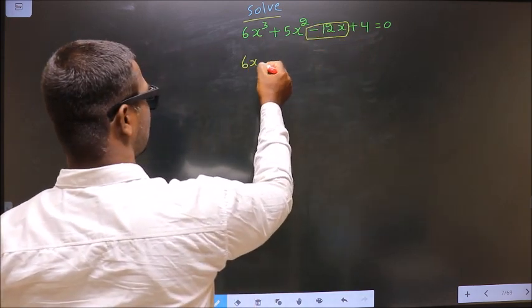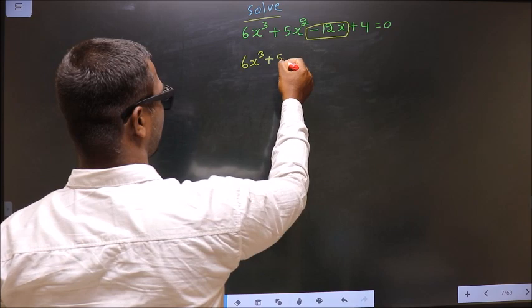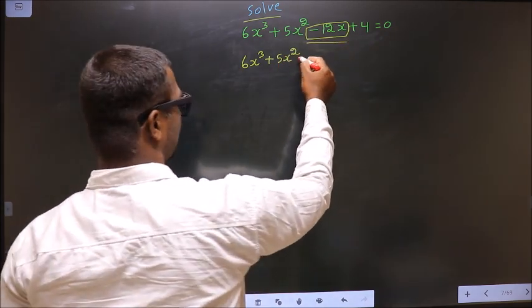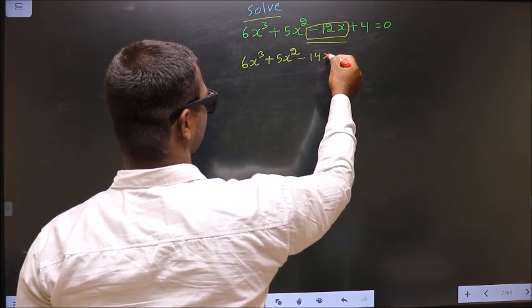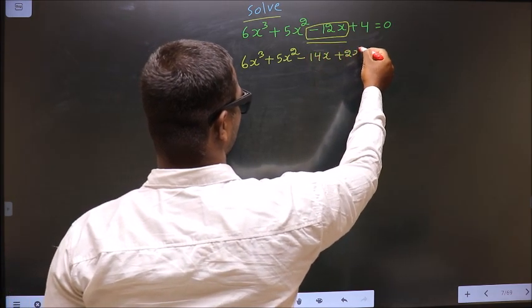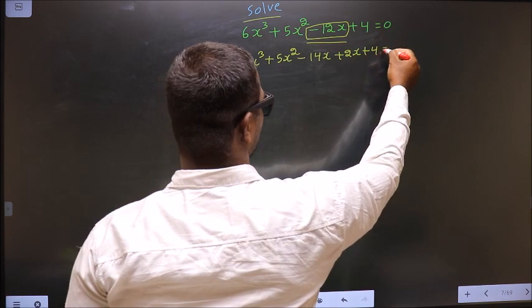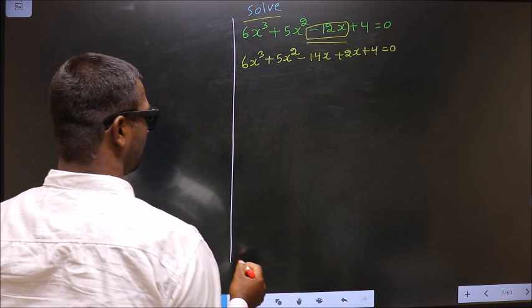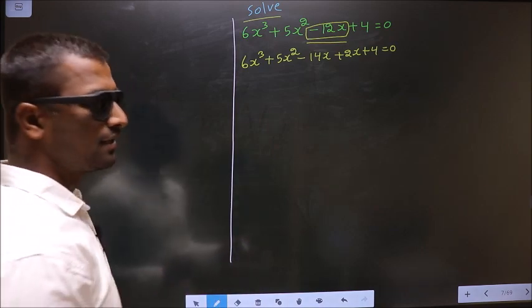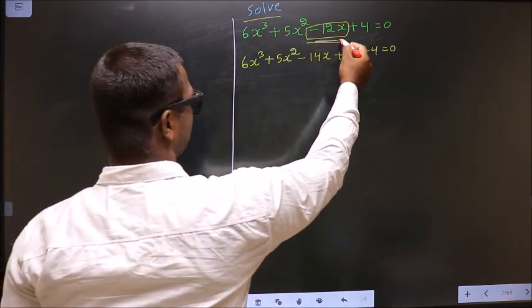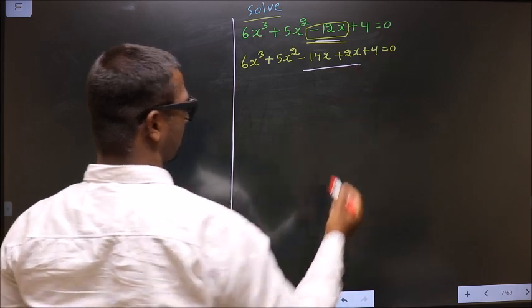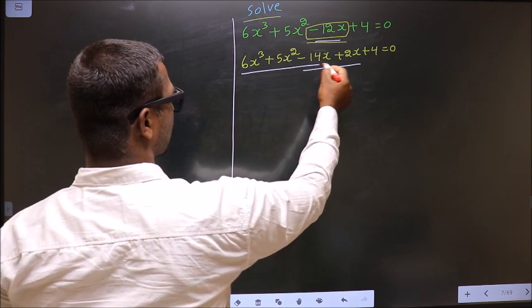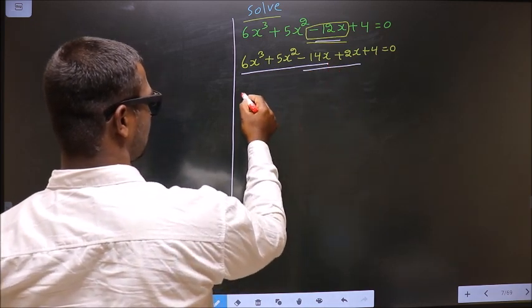So 6x³ + 5x². In place of minus 12x, I write minus 14x + 2x + 4 = 0. In place of minus 12x, I have written this. Next, what can you take out common from these 3 terms? It is x.